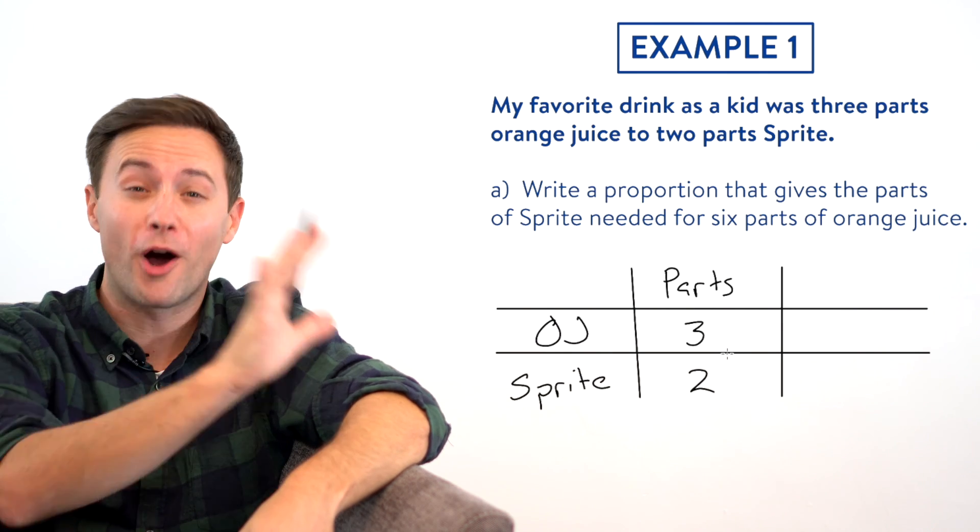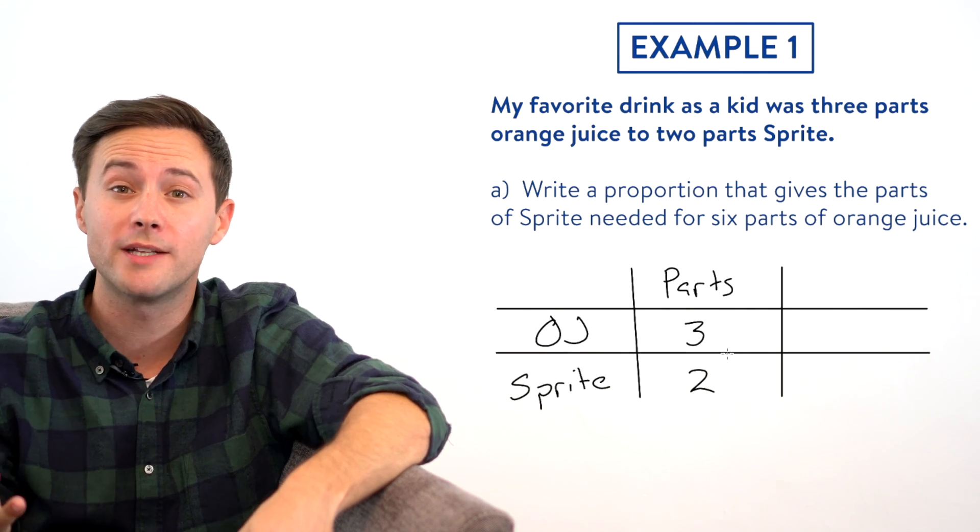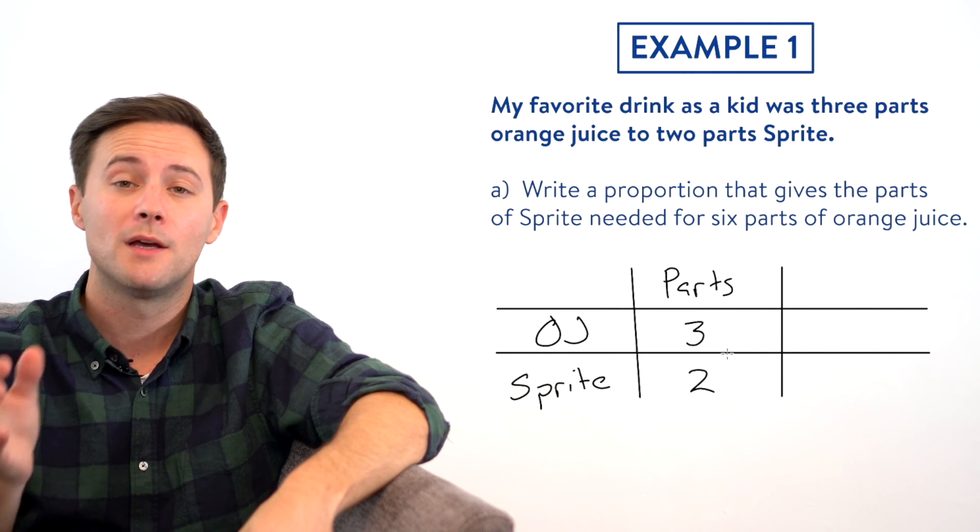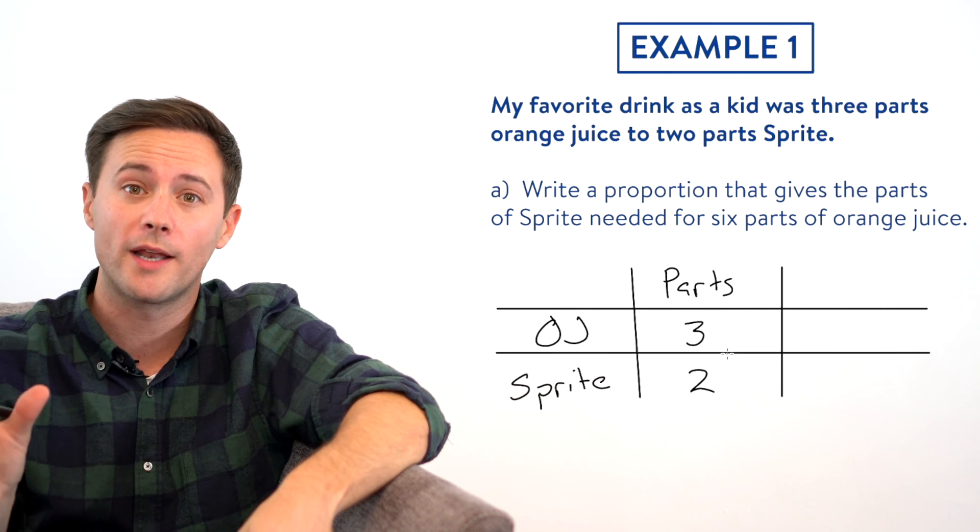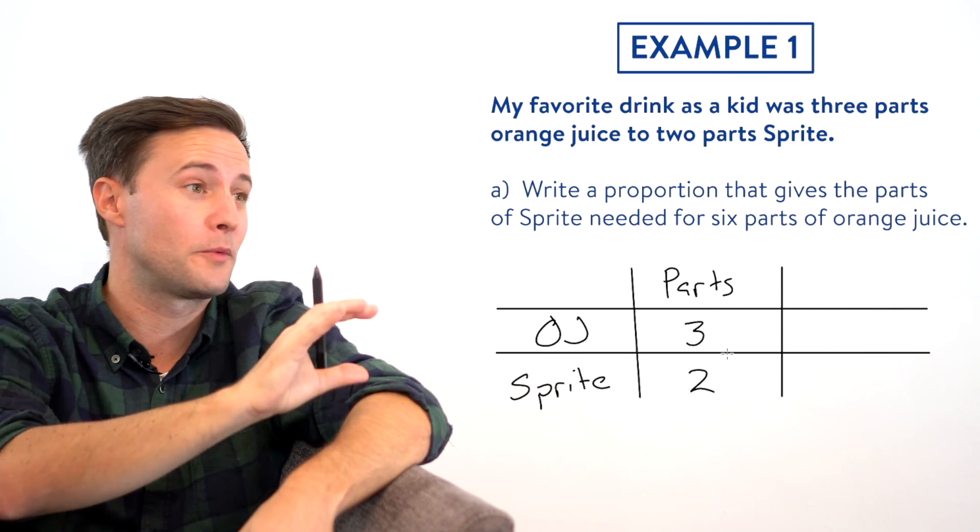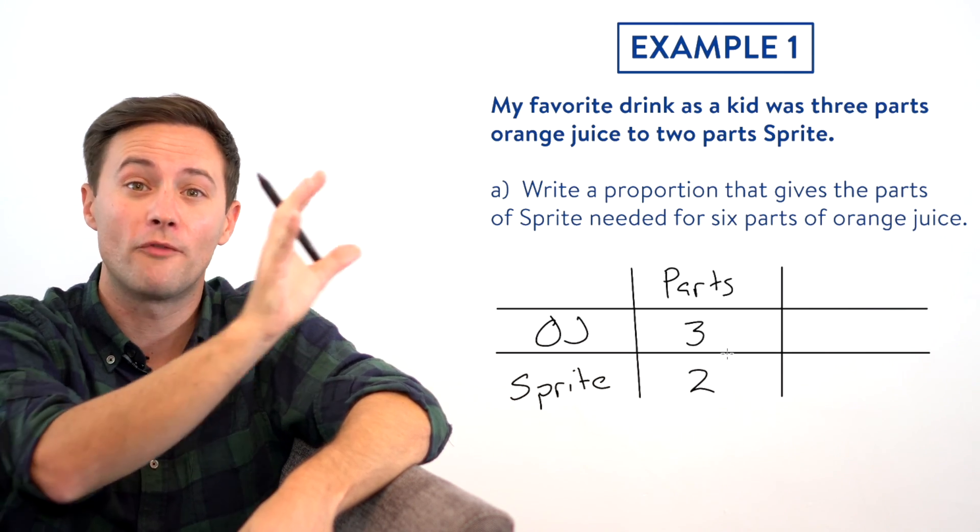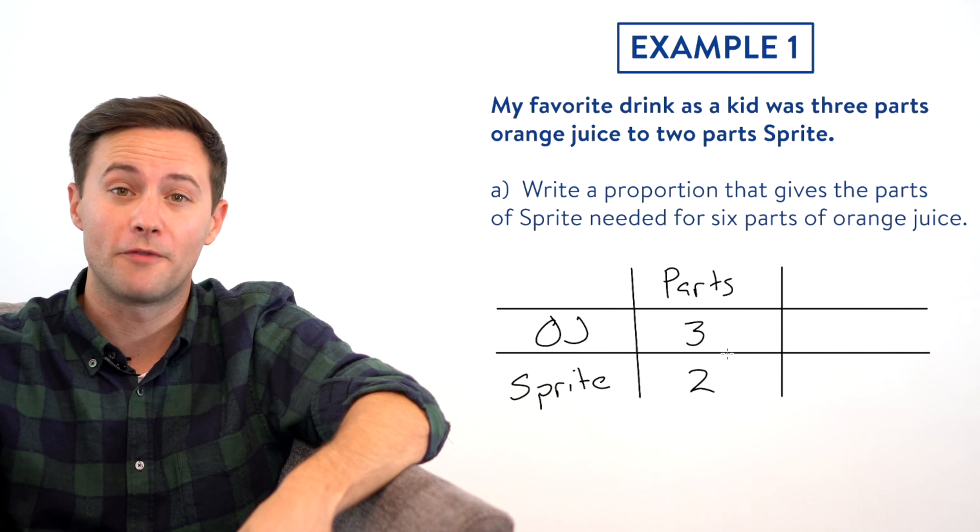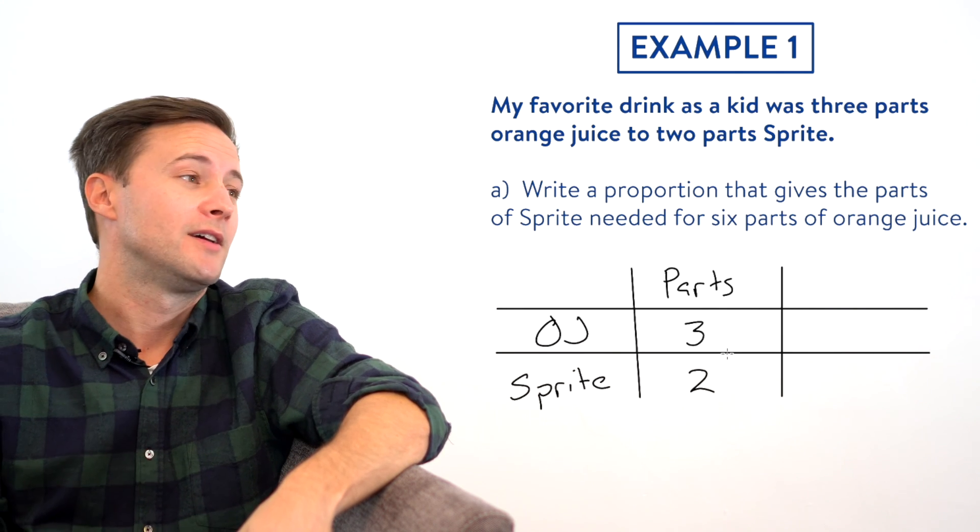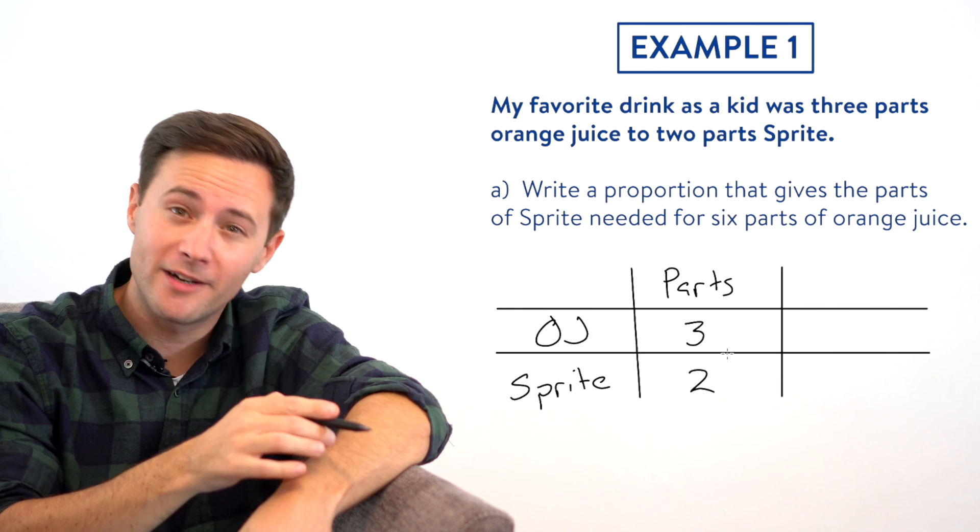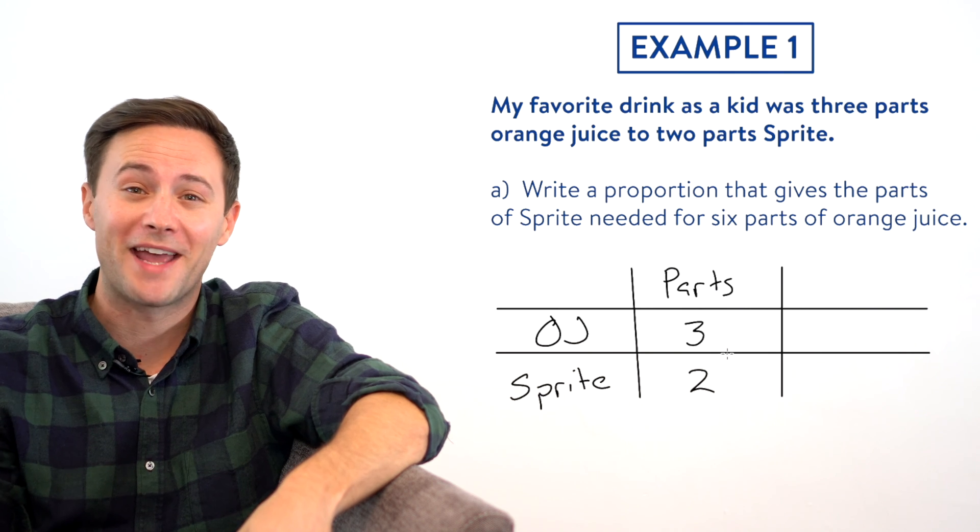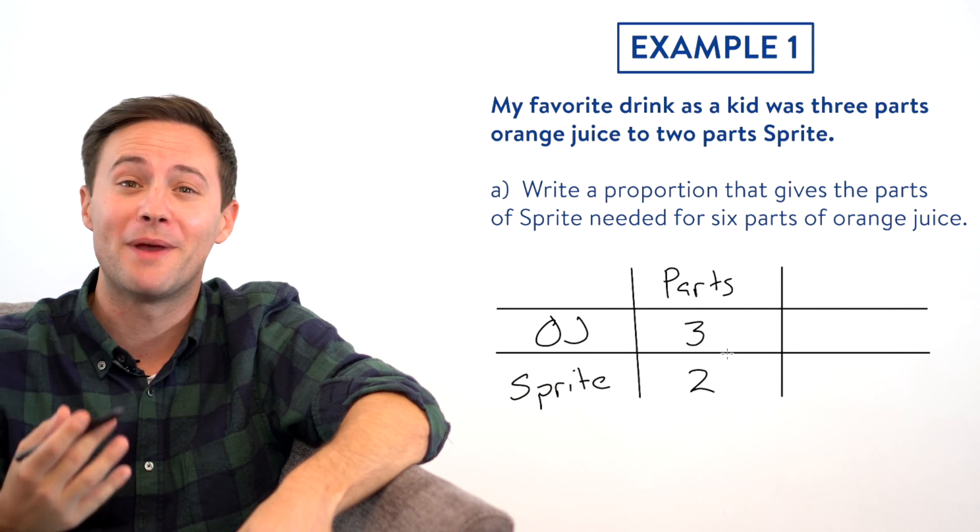Now don't get too confused with the word parts. Parts is kind of just like a placeholder for units. When they say it's three parts orange juice to two parts Sprite, what that means is that you could use whatever units you want. And as long as you have three, whether that's three liters or three gallons or three milliliters of orange juice, that you also use the same units for the Sprite. It really just depends on what you have handy to measure and how much you need.